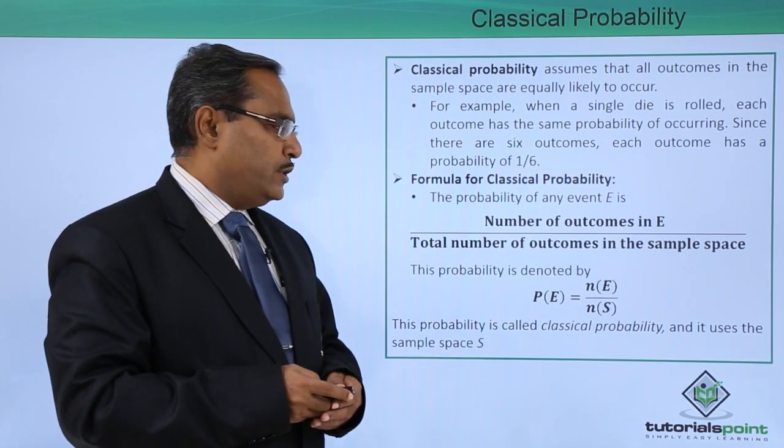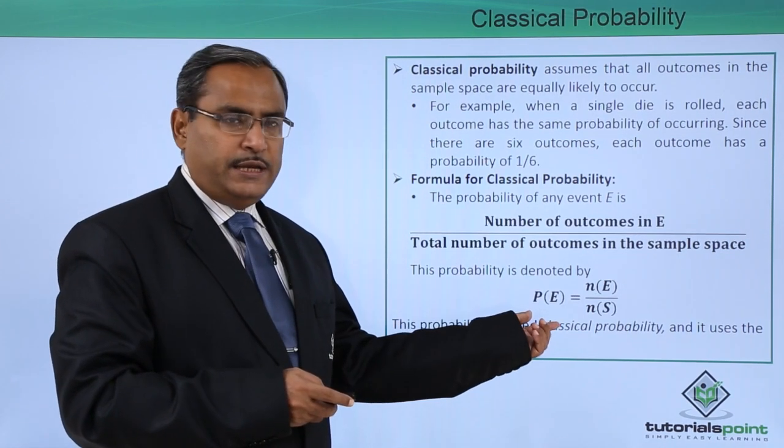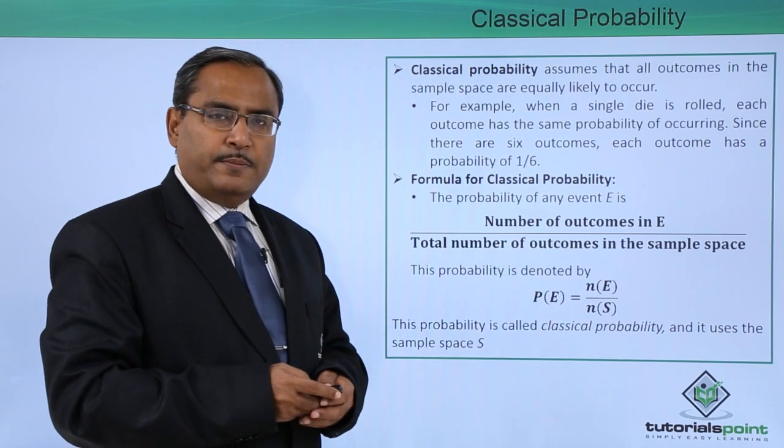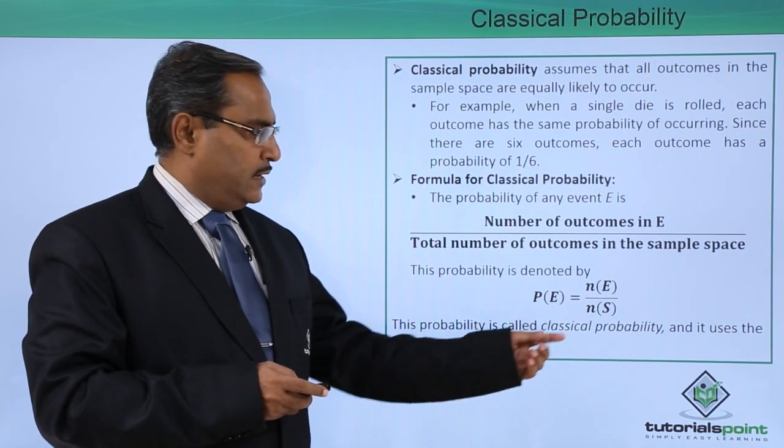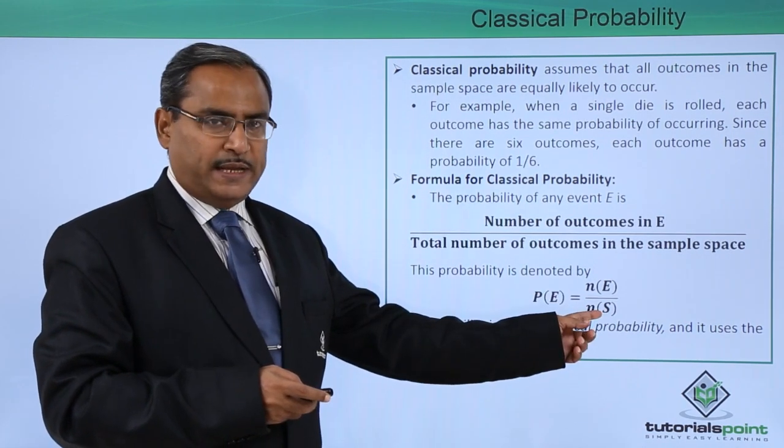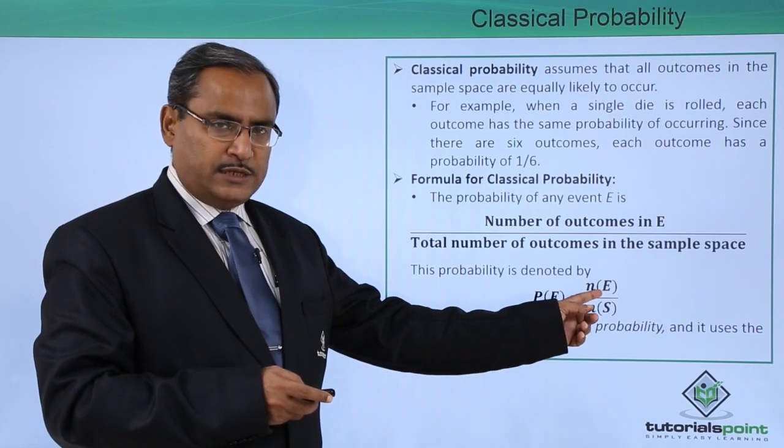This probability is denoted by P(E) = n(E) / n(S). Here we are having the sample space S and here we are having the respective event E.